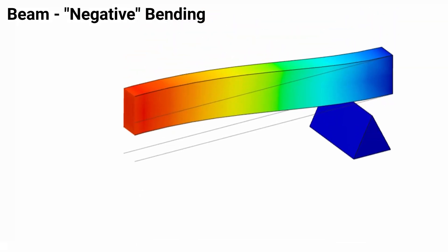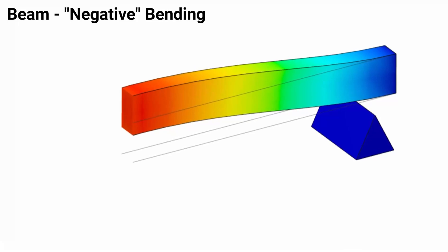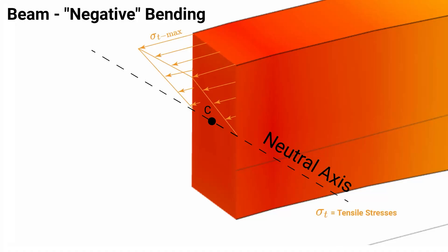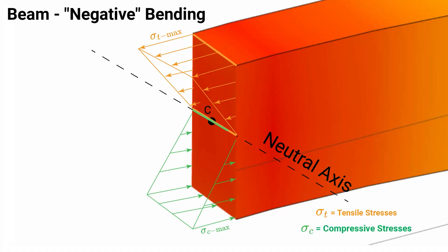Visualizing the stresses developed due to negative bending, we have the same neutral axis occurring at the centroid of the cross section. Directly above the neutral axis we will have tensile stresses, which are zero at the neutral axis and maximized at the very top tensile fiber. The compressive stresses are zero at the neutral axis and maximized as we go below to the very bottom compressive fiber.